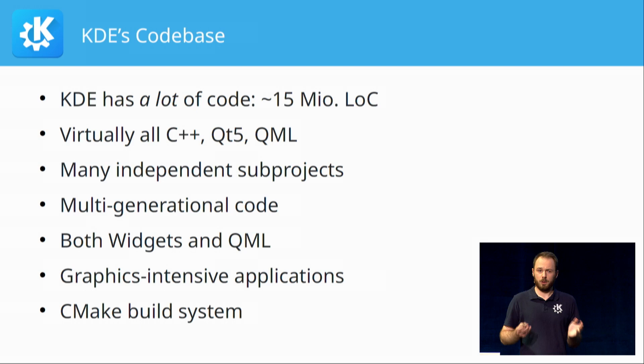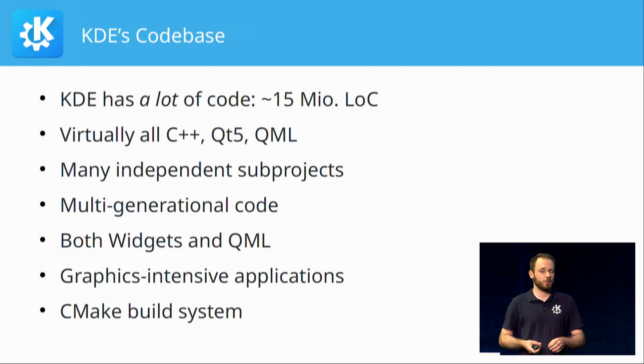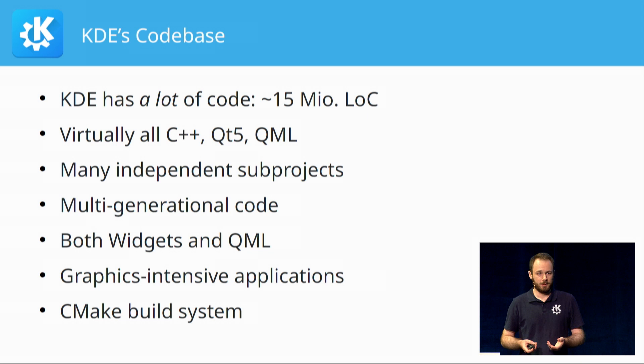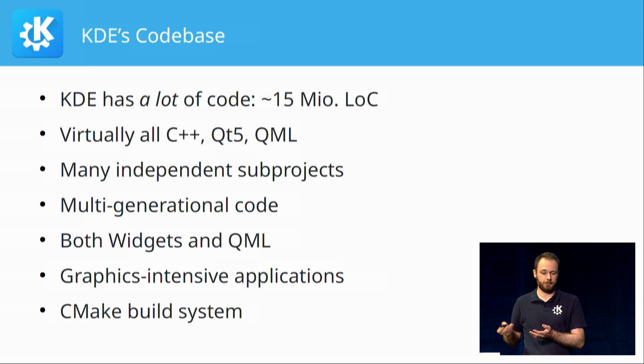Before we talk specifics about porting KDE towards Qt 6, we need to talk a little bit about KDE's codebase in general. KDE has a lot of code — about 15 million lines, most of it C++, everything based on Qt 5, and a fairly decent amount of QML code too. KDE is not one big monolithic thing; it consists of lots of independent sub-projects. The Plasma team is one such sub-project, fairly independent from something like Krita, but there's still good collaboration between them, and they're all based on the same foundational libraries.